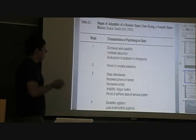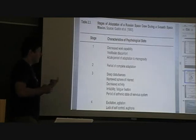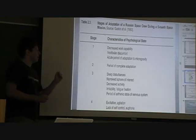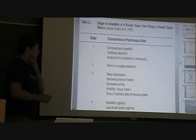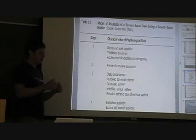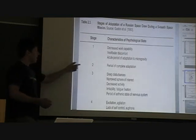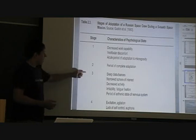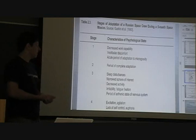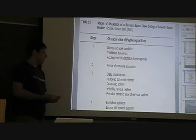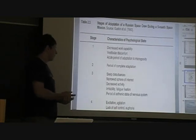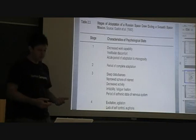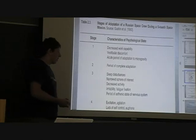So, let's look at some stages of adaptation now. These are the four different stages that astronauts go through. And what really shocks you is, in the middle of this, you have a period of complete adaptation. So you start off stage one, you get to orbit, you have decreased work capability, vascular discomfort, and acute period of adaptation of microgravity. So acute period is a short but severe period where you're adapting to the microgravity. Then you have a second period of complete adaptation. So you have no problems, you're great. You feel like, wow, I can really do this stuff in orbit, no problems. And then you get into stage three where you start having sleep disturbances. You have a narrow sphere of interest, decreased activity, irritability, and fatigue, fixation, and a period of asthenic state of nervous system. Remember we said that the asthenic state was very low energy. So you just don't feel like you're going to be able to do things. And then finally, stage four, you have excitation, agitation, lack of self-control, and a sense of euphoria.